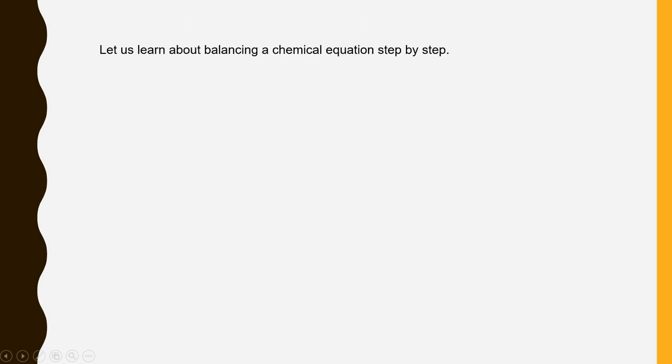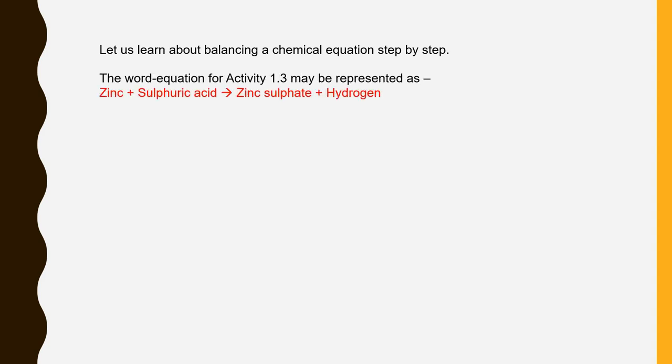Let's learn about balancing a chemical equation step by step. First we write a word equation as we already have seen in activity 1.3. We need zinc when reacted with sulfuric acid produces hydrogen gas. Now we will write in a formula form that is an equation of Zn plus H2SO4 gives ZnSO4 plus H2.